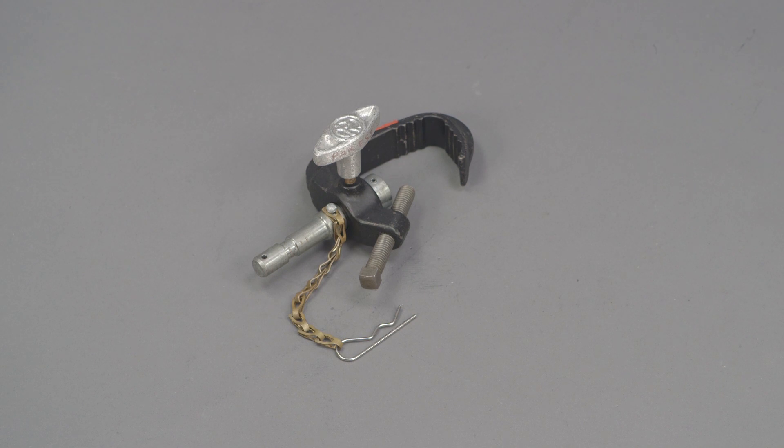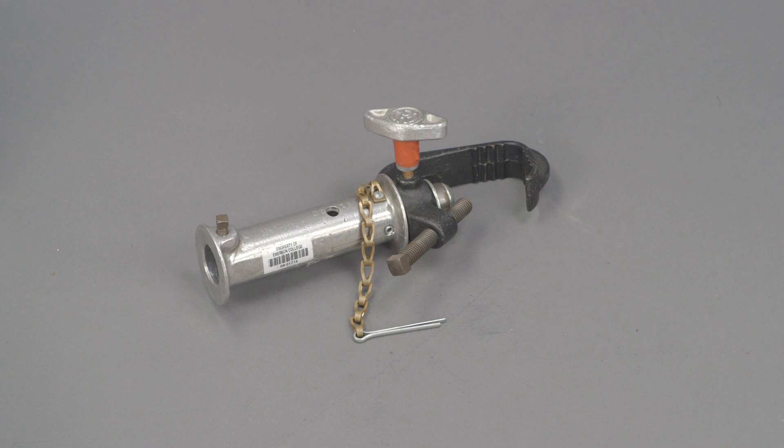Pipe hangers are for hanging lights from a pipe. This is a pipe hanger with a baby pin. This is a pipe hanger with a junior receiver.